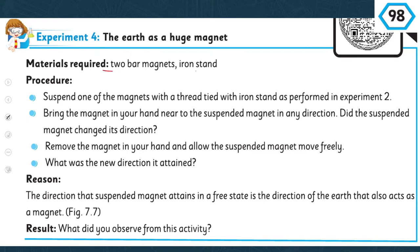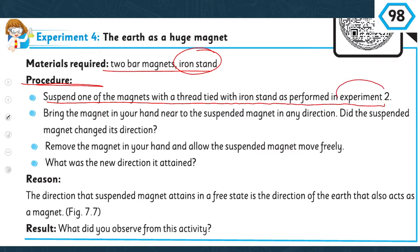First, let's look at the materials required: two bar magnets and an iron stand. The procedure is: suspend one of the magnets with a thread tied to the iron stand, as performed in Experiment Two in the previous lecture — exactly like that, hang the bar magnet with the iron stand. Then bring the magnet in your hand near the suspended magnet in any direction.